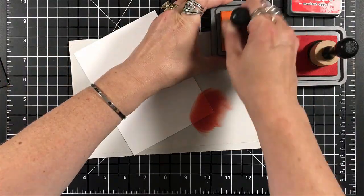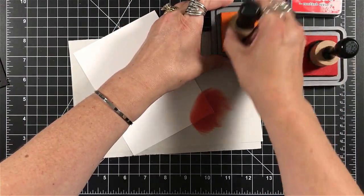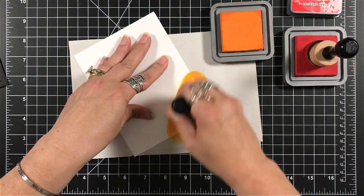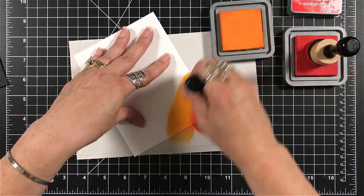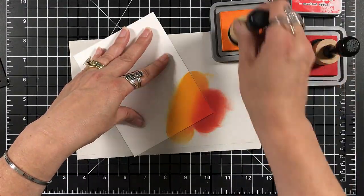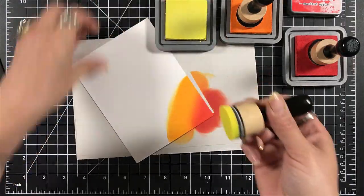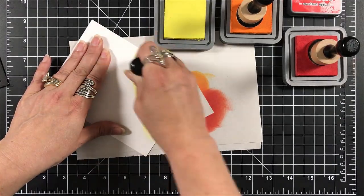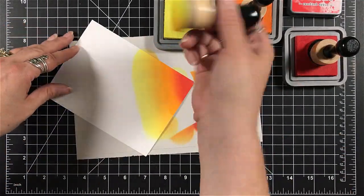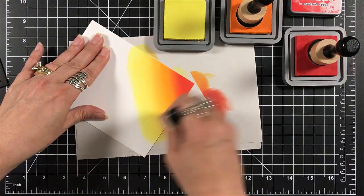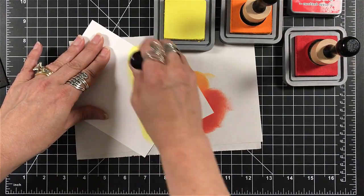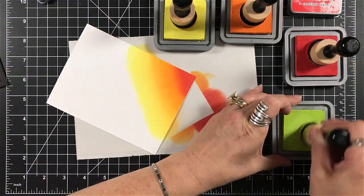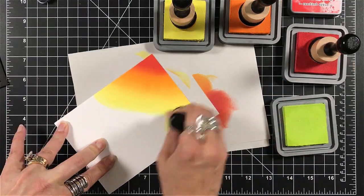So I set that aside because that's the only part that I'm going to die cut. And I grabbed a piece of my Bristol paper, Bristol cardstock. And I've also grabbed candied apple, carved pumpkin, squeezed lemonade, and twisted citron. So I want to do some blending of my oxides down in the corner of this panel. Now this panel is cut to four and a quarter by five and a half. So between the black cardstock and this piece, it will cover my card base completely, which is what I wanted it to do.